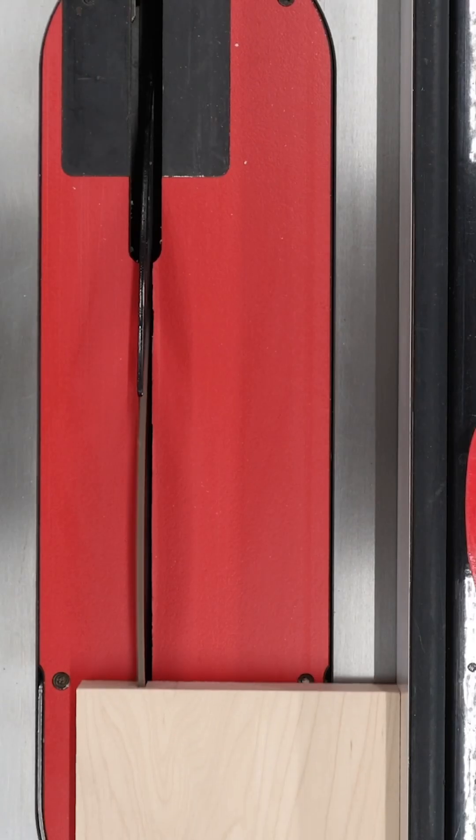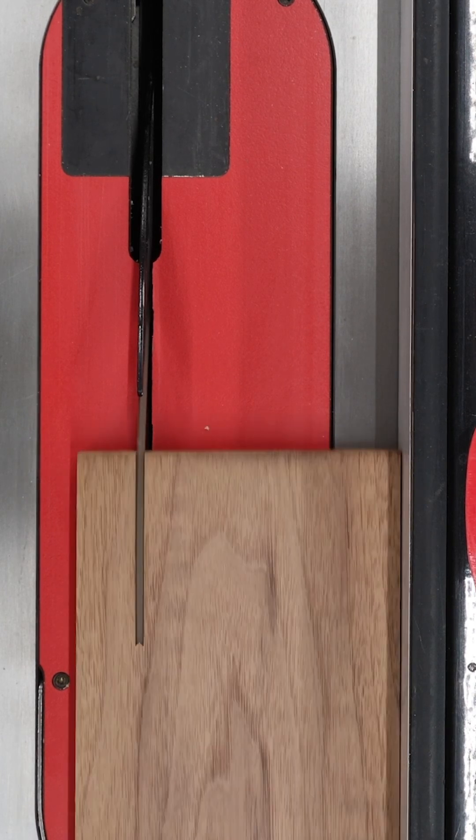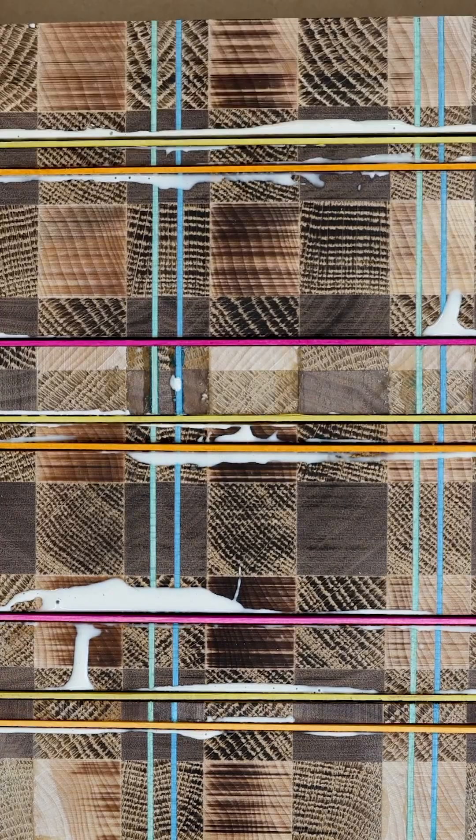Let's start by ripping some maple, white oak, and walnut into strips. And then we'll glue them up to make some wood that looks like plaid.